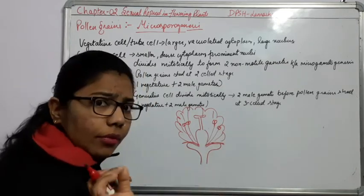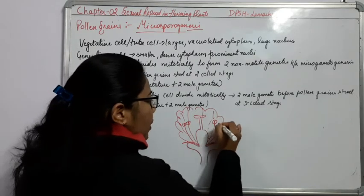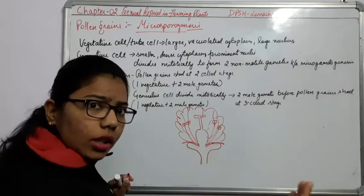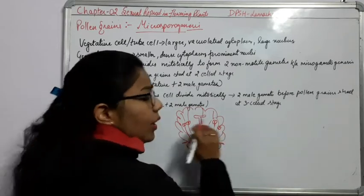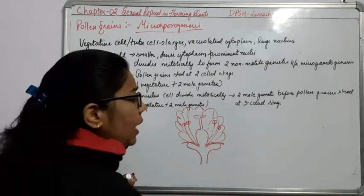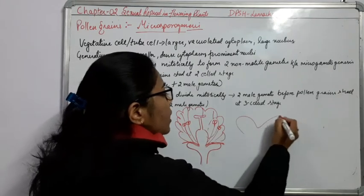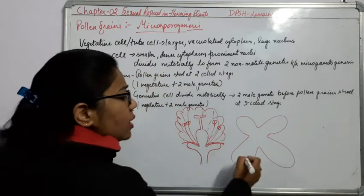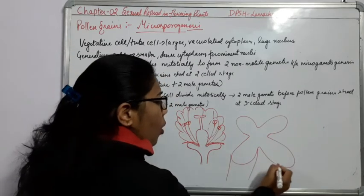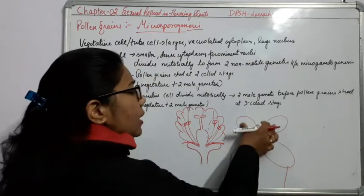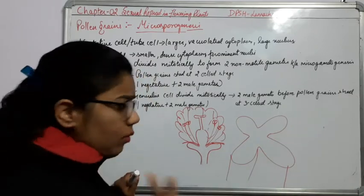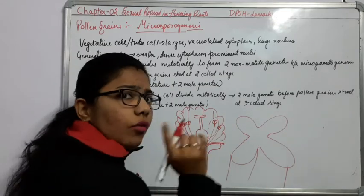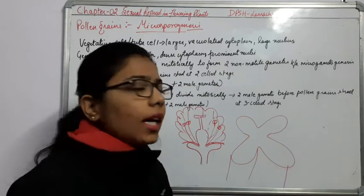How will the male gametophyte form? If we take the male part — the anther — and take a cross section of this anther, we get a bilobed structure. This is the simpler form of the anther. The anther has two lobes, and in each lobe it is divided into two thecas. That is why we say these are the dithecas.